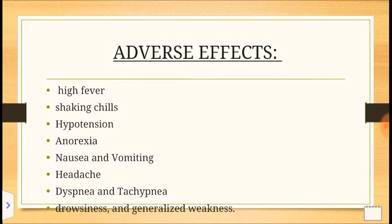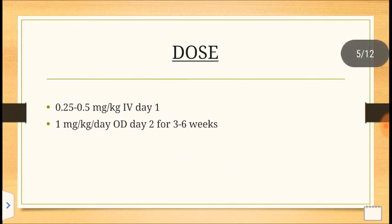After adverse effects, we have doses. The drug is given through IV or per oral. If given IV, then 0.25 to 0.5 mg per kg is suggested, and if taken per oral, then 1 mg per kg is suggested.